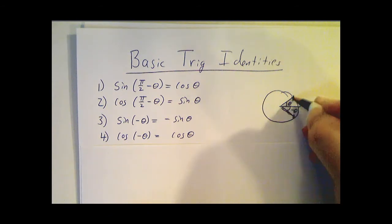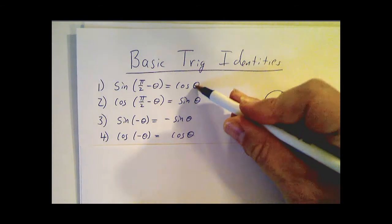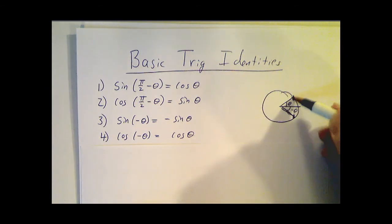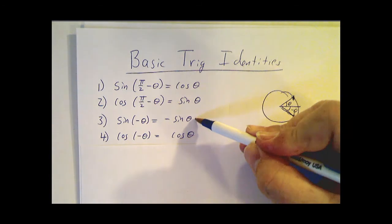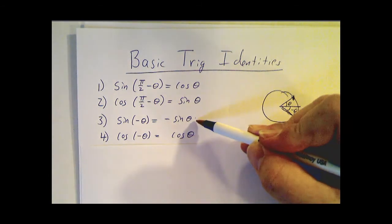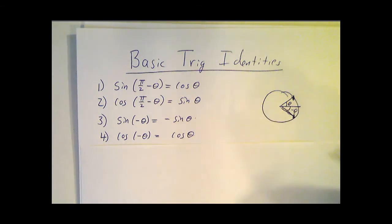They have the same x coordinate, so they have the same cosine, but their y coordinates are negatives of each other, so you get minus the sine. The sine of 30 degrees is 1/2, the sine of minus 30 degrees is minus 1/2.